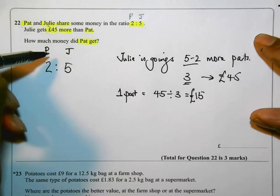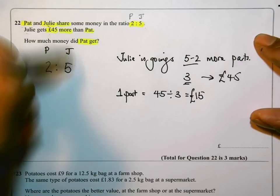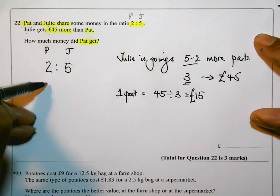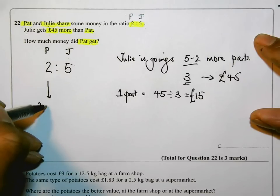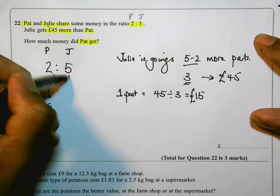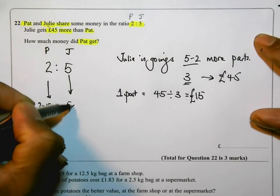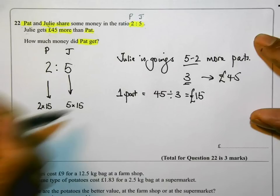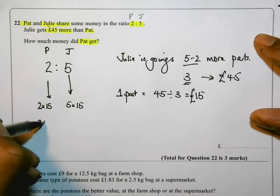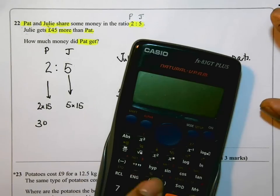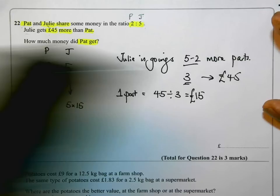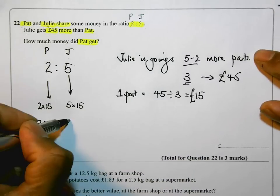Each part is worth £15. Remember, Pat is getting 2 parts, Julie is getting 5 parts. So Pat gets 2 times 15 and Julie is going to get 5 times 15. Two times 15 is £30, five times 15 is £75.